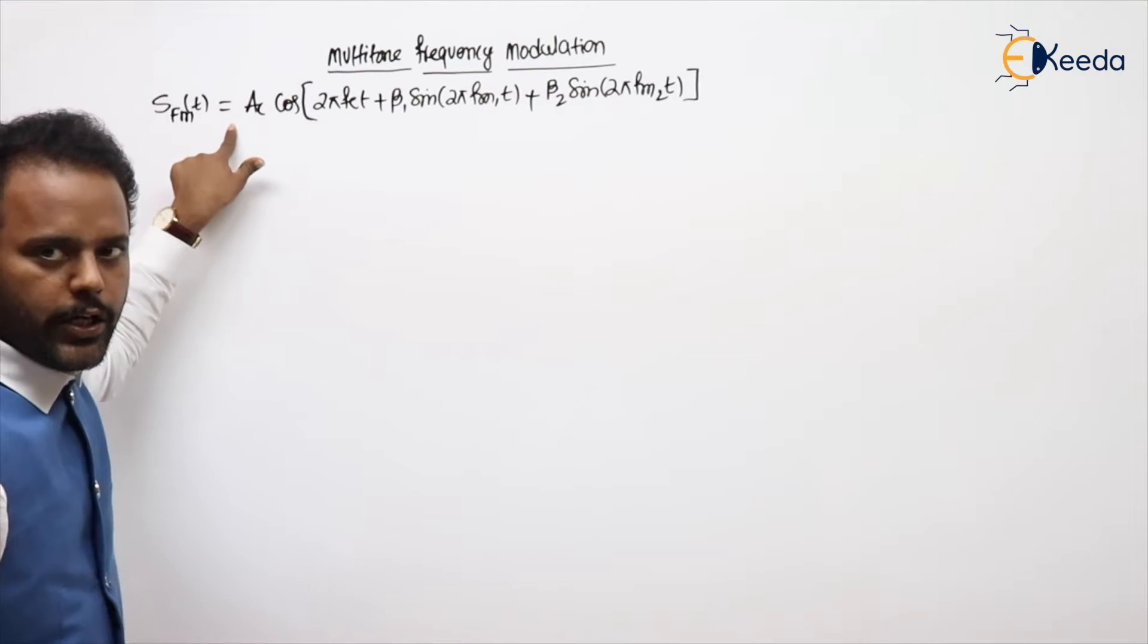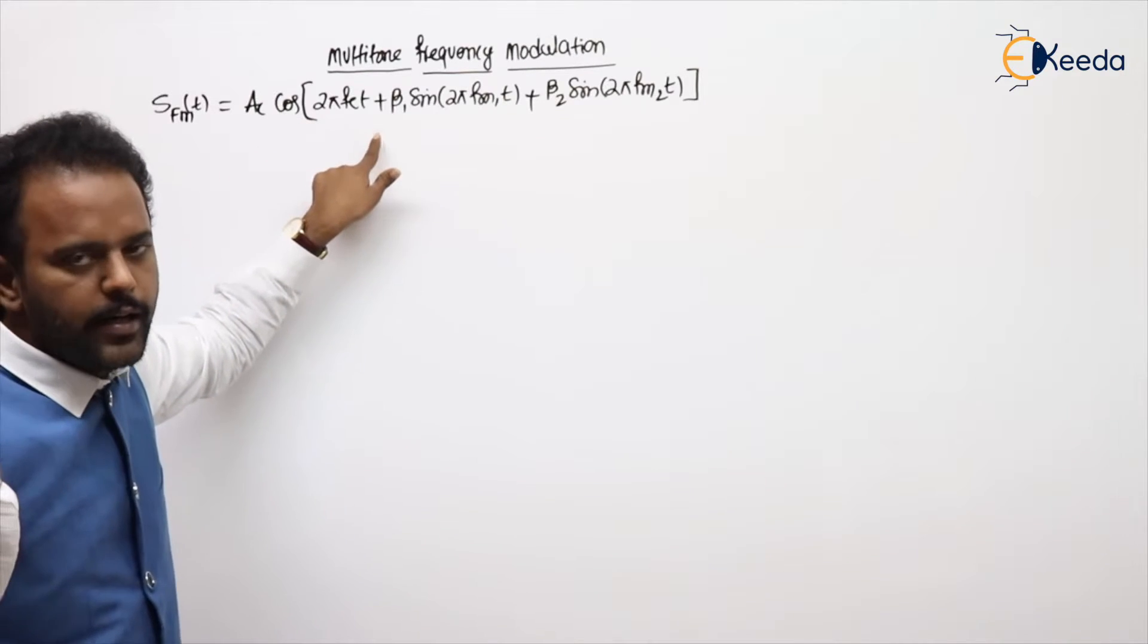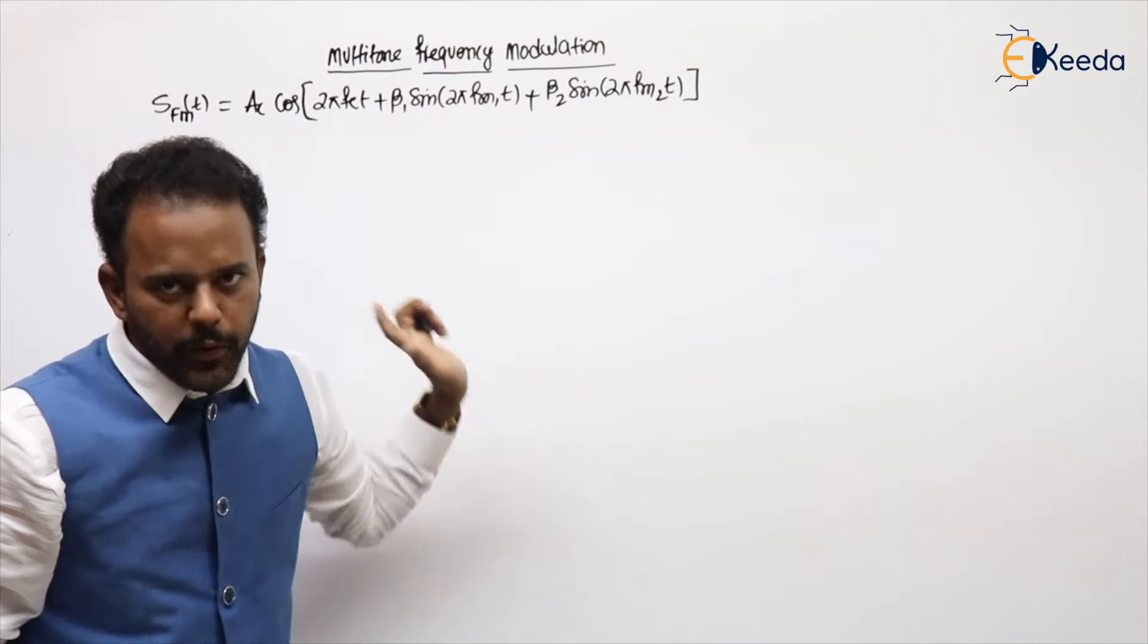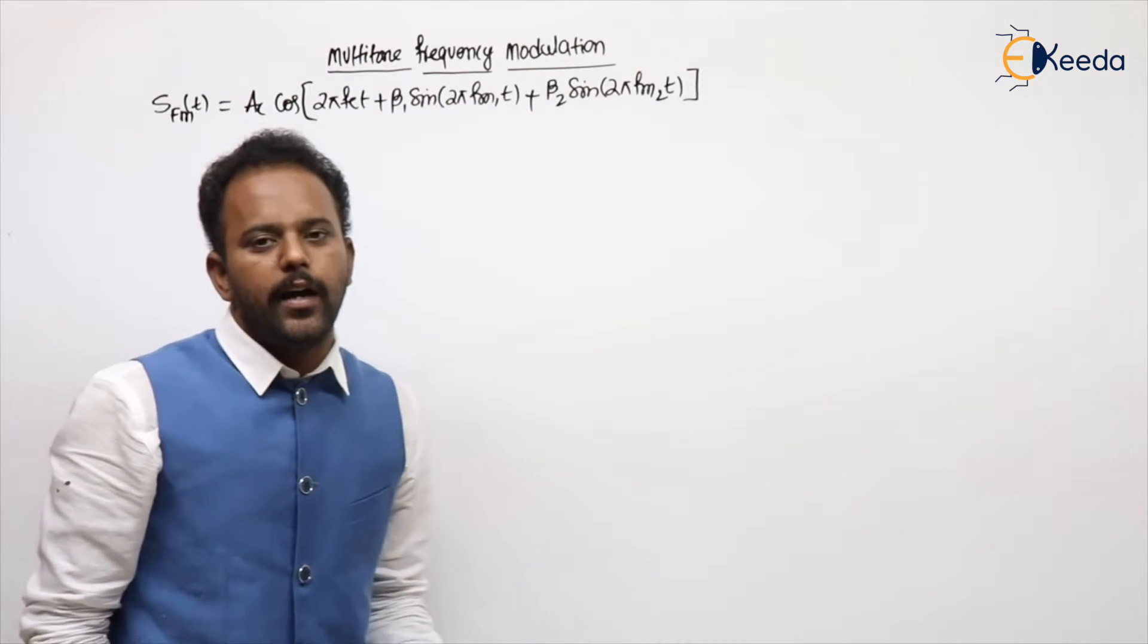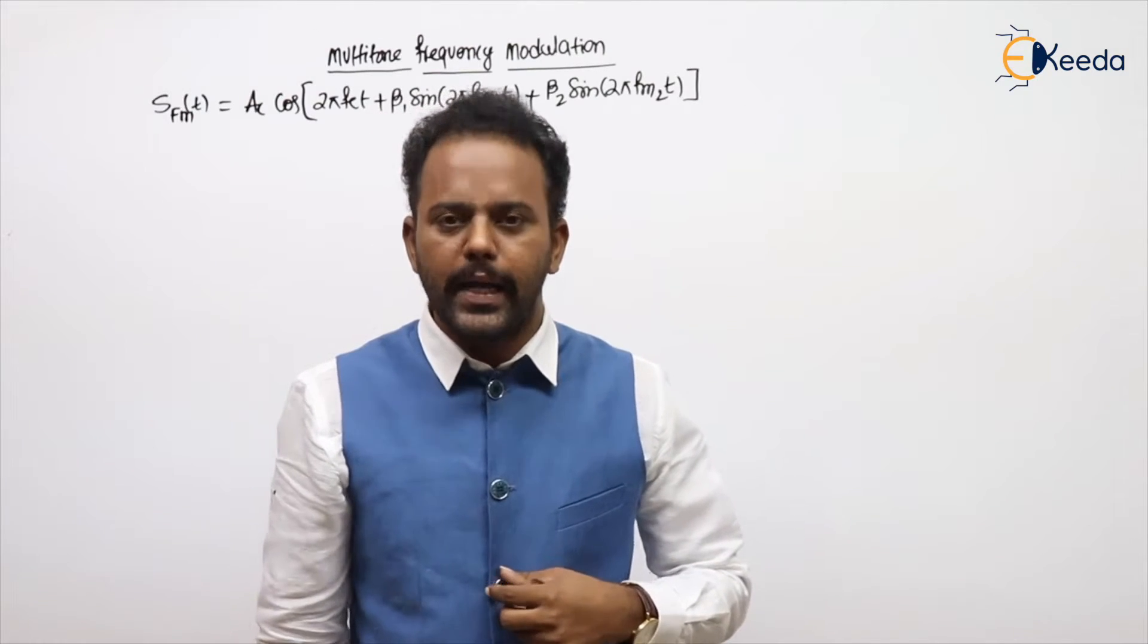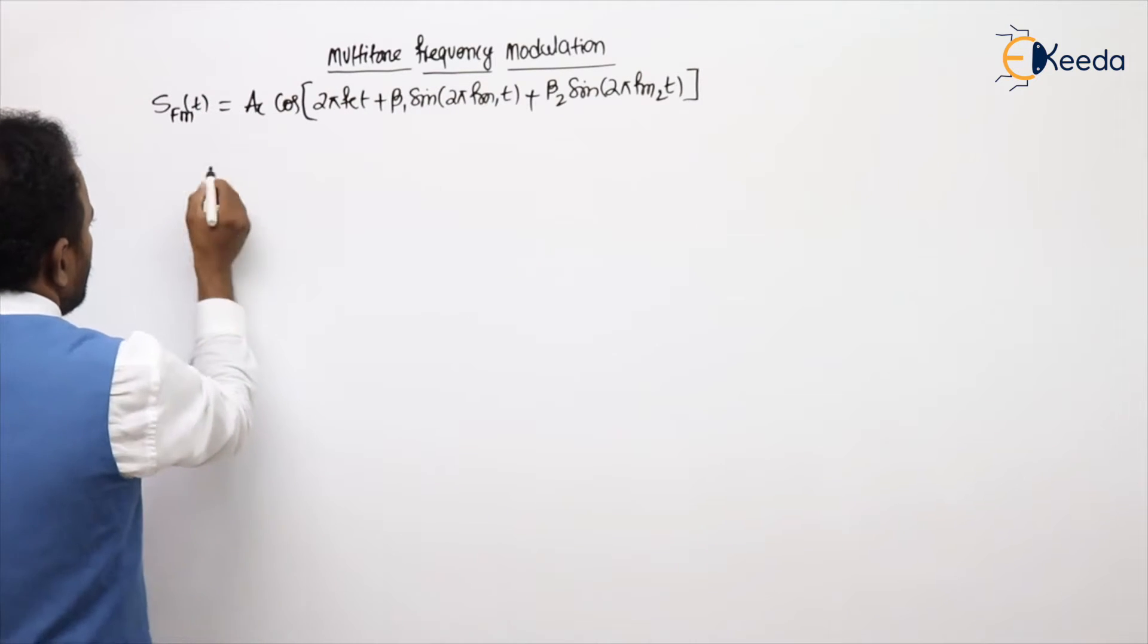This is the multi-tone FM expression: Ac cos(2π fc t + β1 sin 2π fm1 t + β2 sin 2π fm2 t). Now I am calculating the overall modulation index as well as I will show you the maximum frequency deviation.